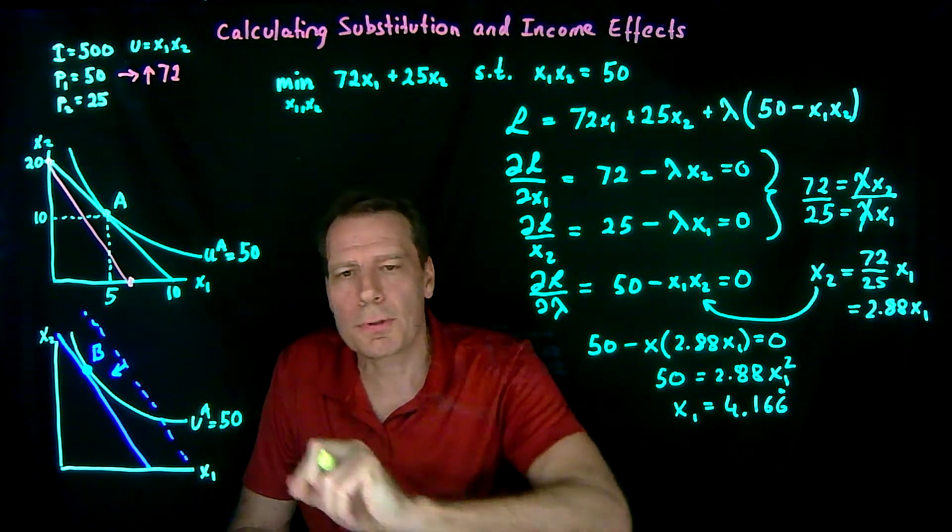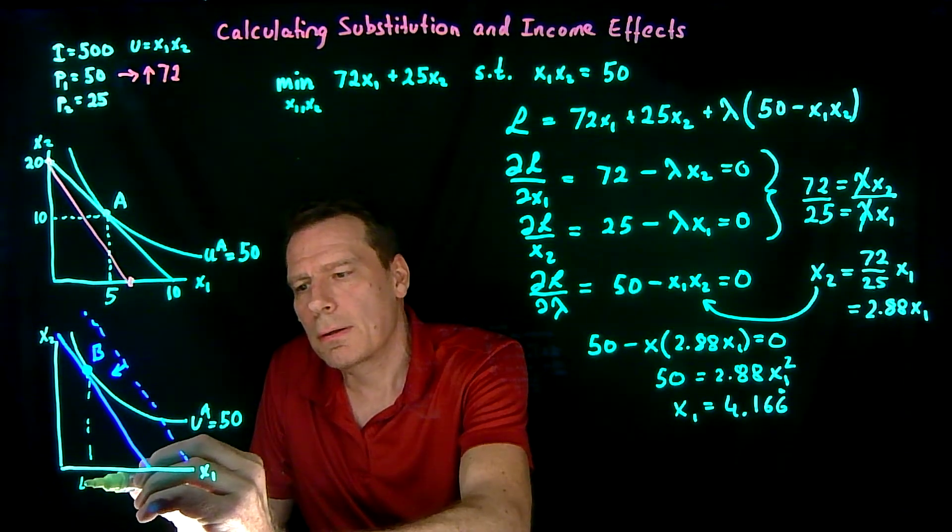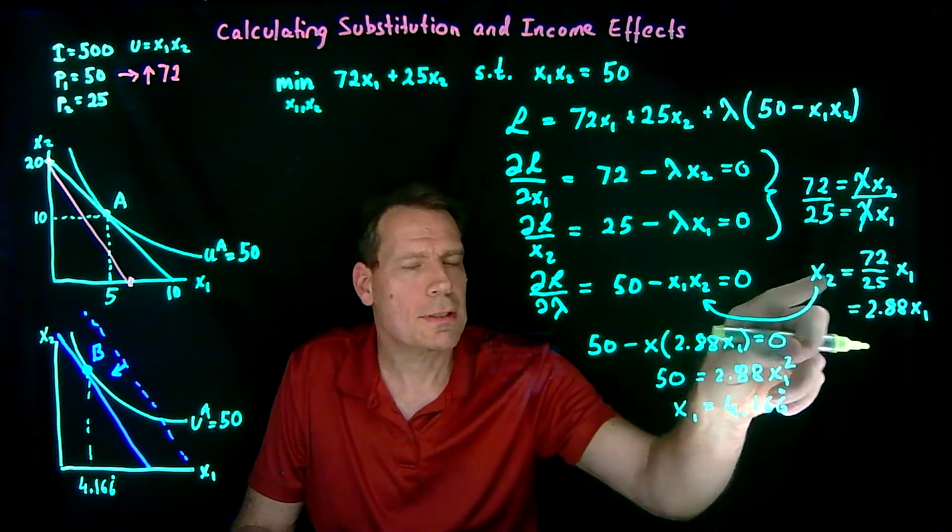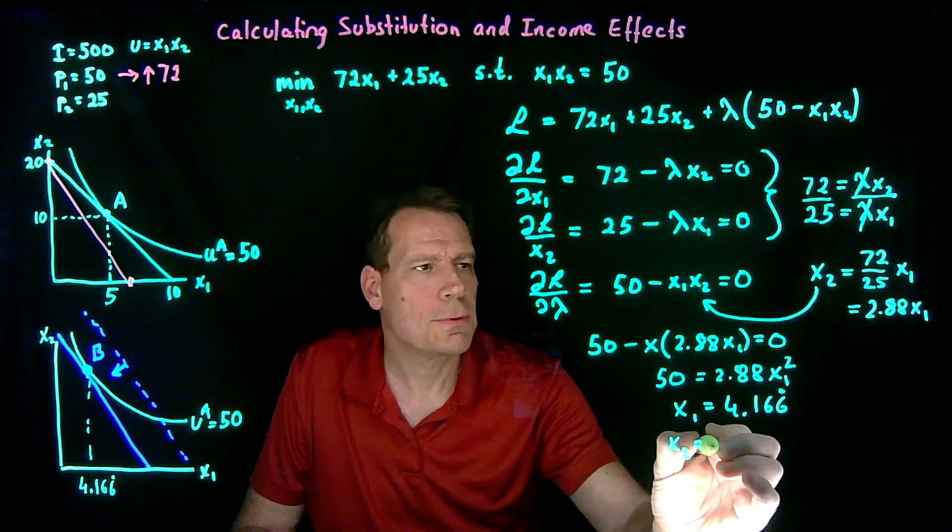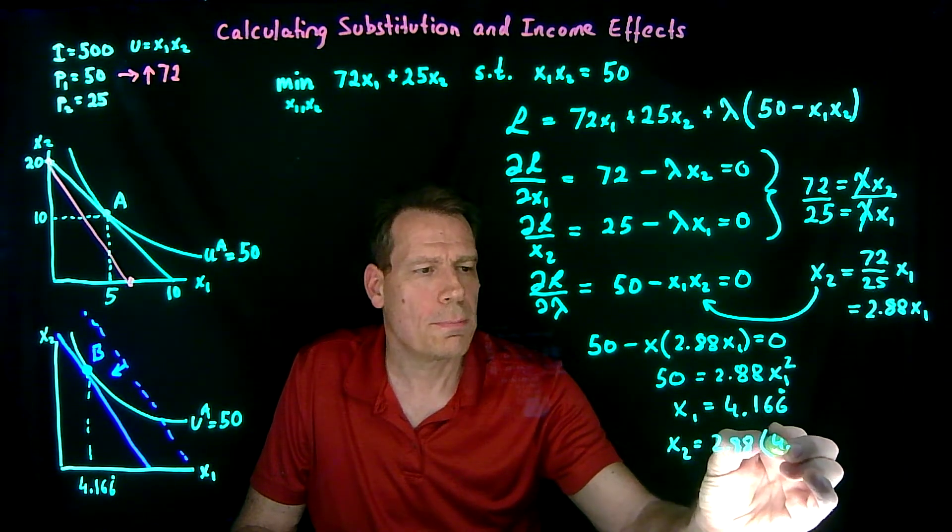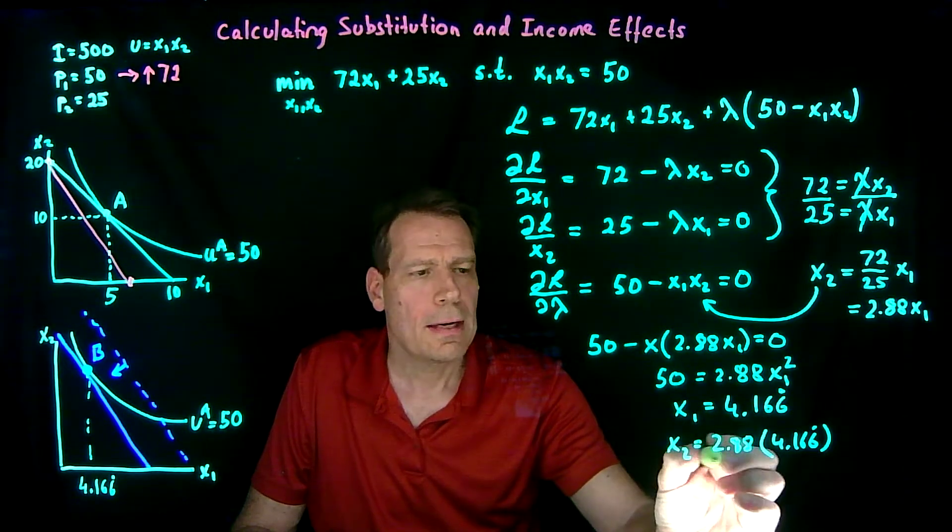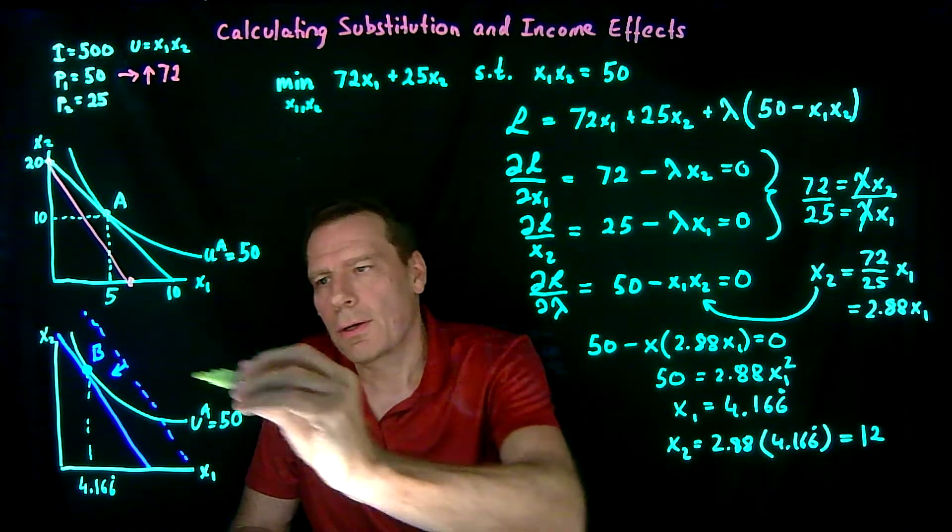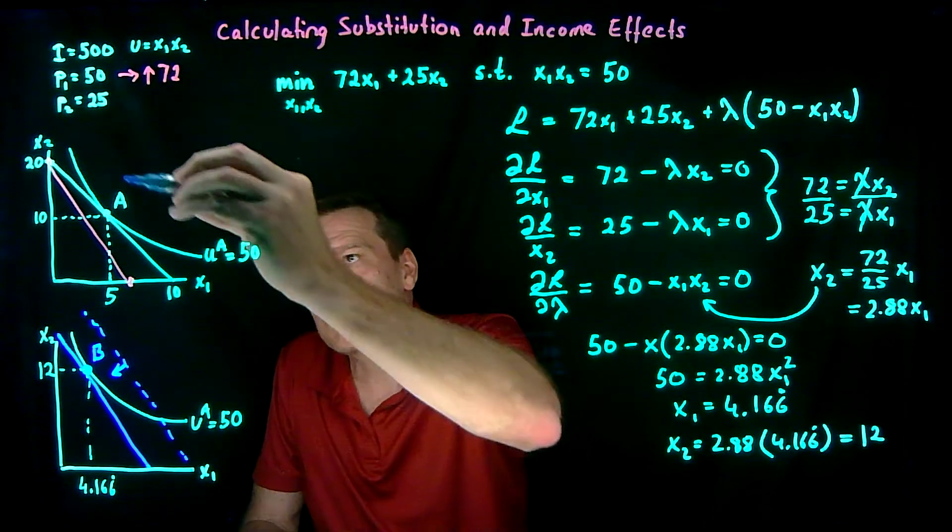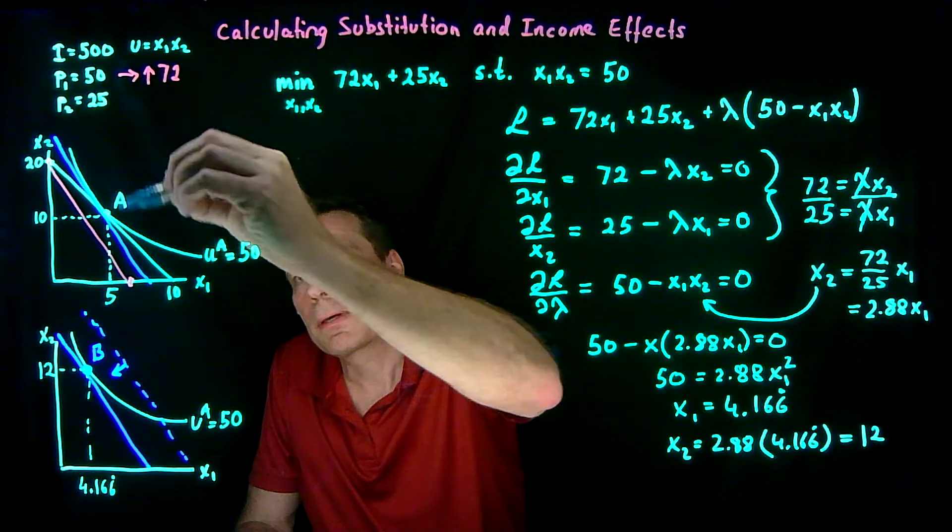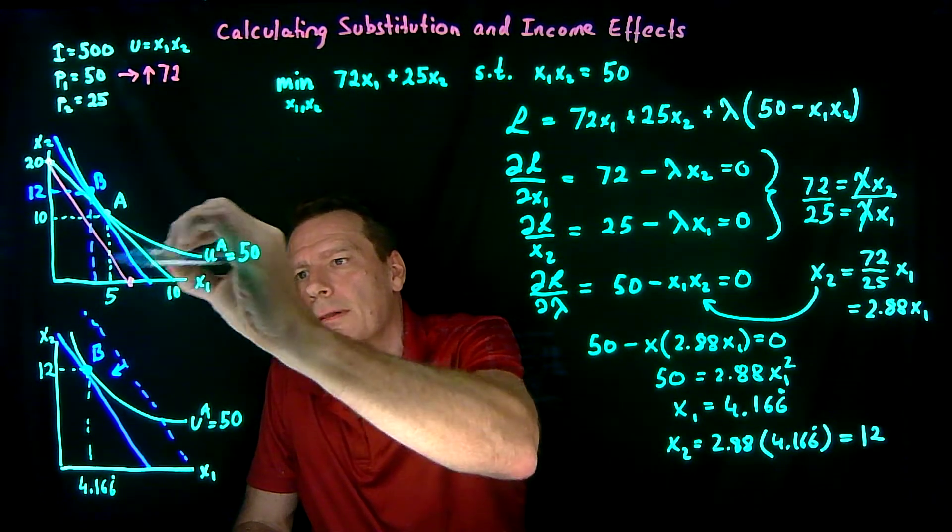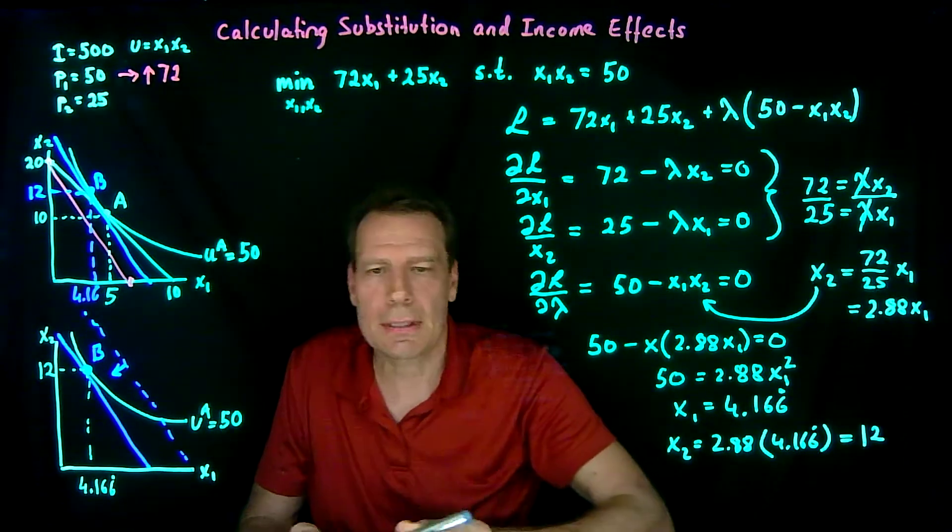So now we've found the x1 component of the B-point. This component here is 4.166 with the 6 repeating. Now we can get x2 by just plugging this x1 back into this equation. So x2 is equal to 2.88 times x1 but x1 is 4.166 so times 4.166 where that 6 continues to repeat. And when we multiply that out that gives us exactly 12. So now we found the second component of the B-point. It's 12. So now we can complete this picture up here. We could put the substitution effect in here. That gives us point B and we now know point B has a consumption level of 12 for x2 and there's 4.16 with 6 repeating for x1.